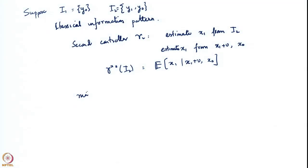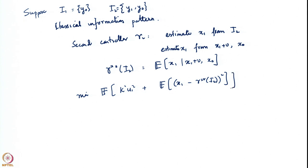γ1 has to minimize the expectation of k squared u1 squared plus the expectation of x1 minus γ2* of i2, the whole square. Now, γ2* of i2 is that conditional expectation, and i2 now has access to the information that is also present in i1.